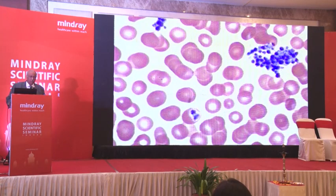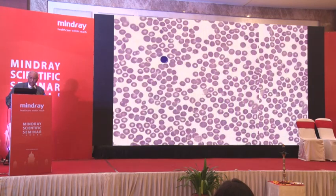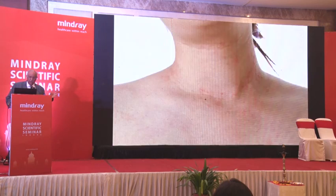Starting with thrombocytopenia: a normal peripheral blood smear shows many platelets clustered together — you don't need a counter to confirm an adequate platelet count. Platelets are produced from megakaryocytes. When thrombocytopenia occurs, the peripheral film shows no platelets — hundreds of red blood cells and one lymphocyte but no platelets.